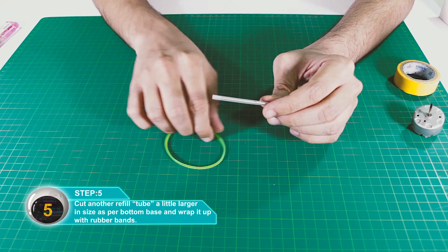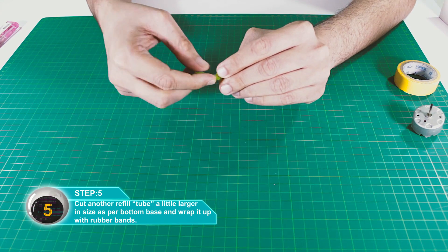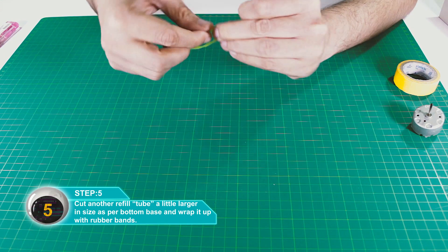Take another refill tube and cut it slightly larger than the bottle's bottom section, then wrap rubber bands around it.